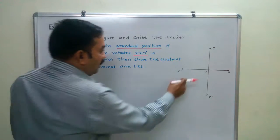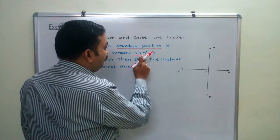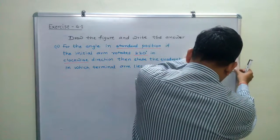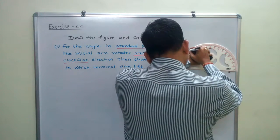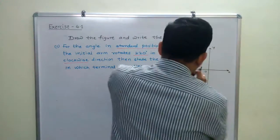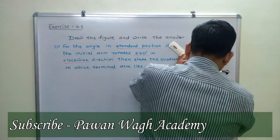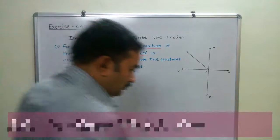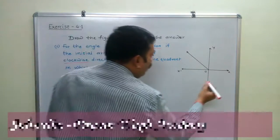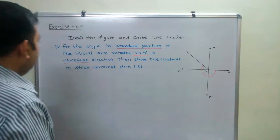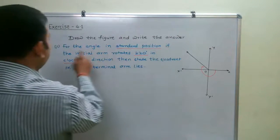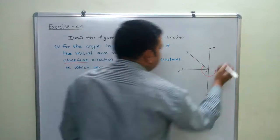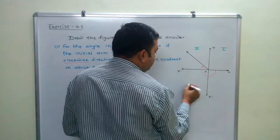After 180 degrees, how many more degrees? If you subtract 180 from 220, it is 40. So the terminal arm is 40 degrees past the negative x-axis, going in the clockwise direction. This puts the terminal arm in the second quadrant — because this is the first quadrant and this is the second quadrant — so it lies in the second quadrant.